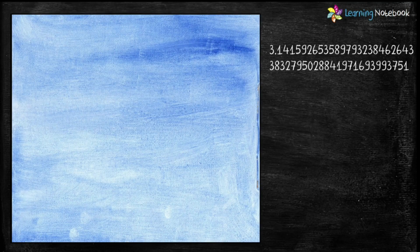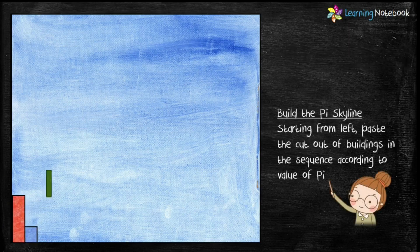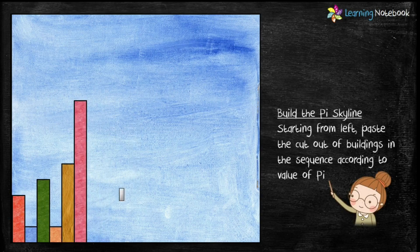Now let's build a pi skyline. Take one A3 white sheet and color it with blue crayons. Then start from the left and paste the cutouts of buildings in sequence according to the value of pi as shown here.